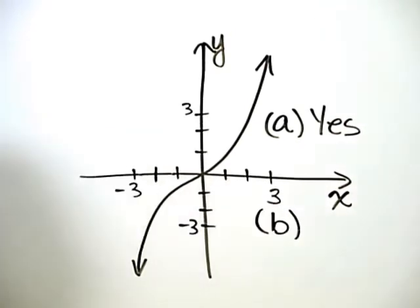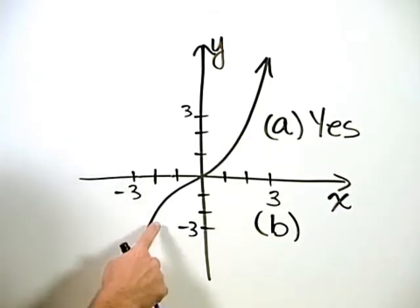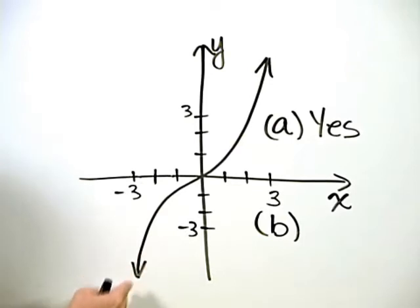Now, given it's a function, we're asked in part B to find its domain and range. So for part B, the domain is all of the inputs, that is, all of the X values.